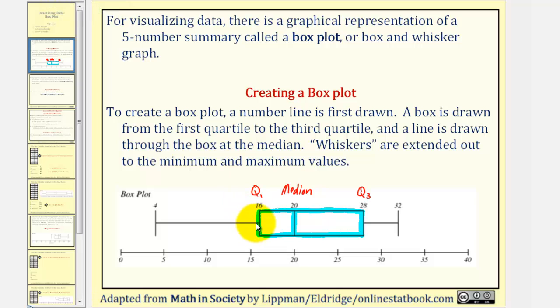And then whiskers are extended out to the minimum and maximum values. Notice how this whisker is drawn out to the minimum of four. We have another whisker on the right, drawn out to the maximum of 32.